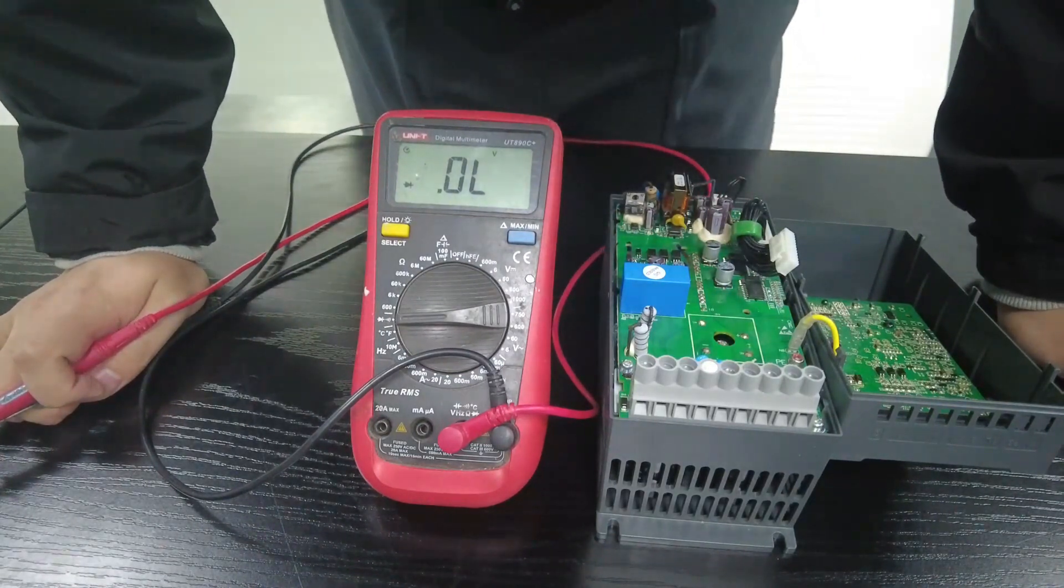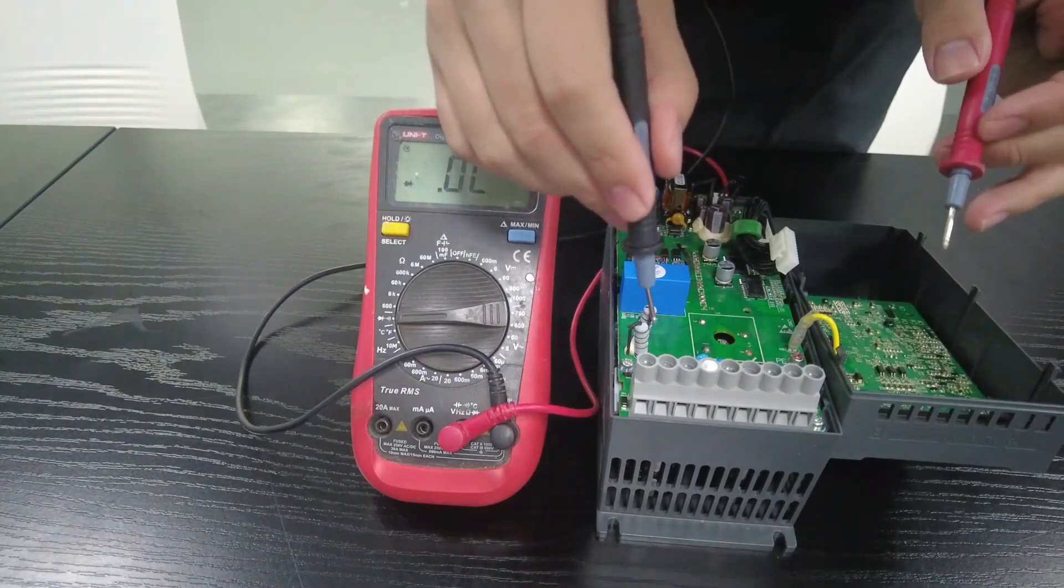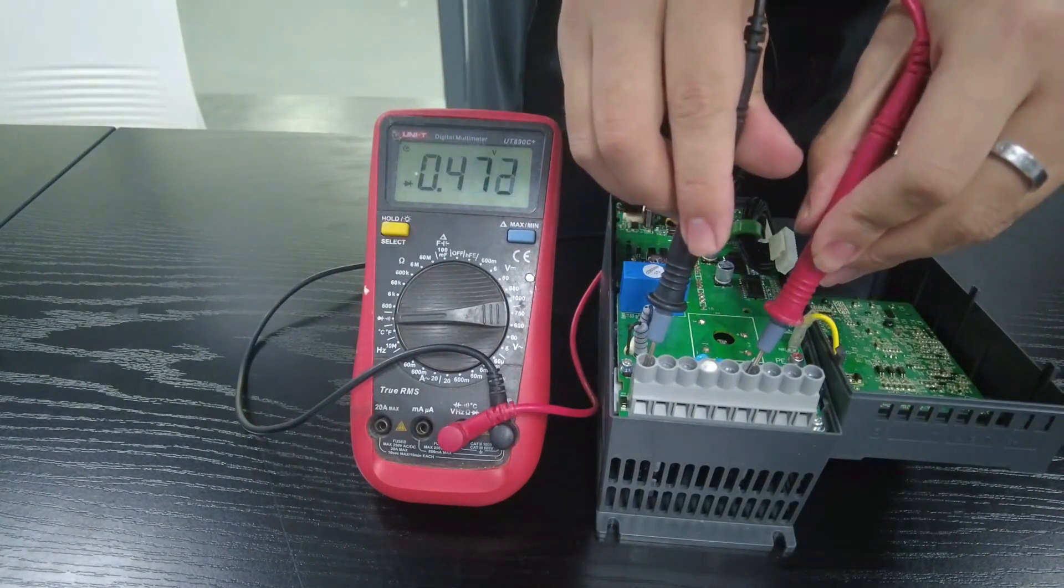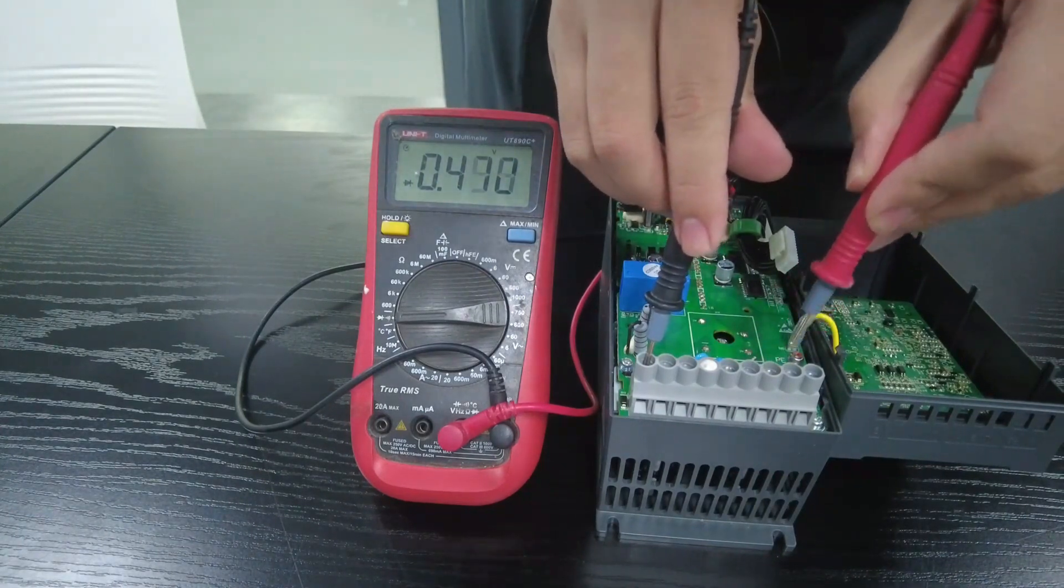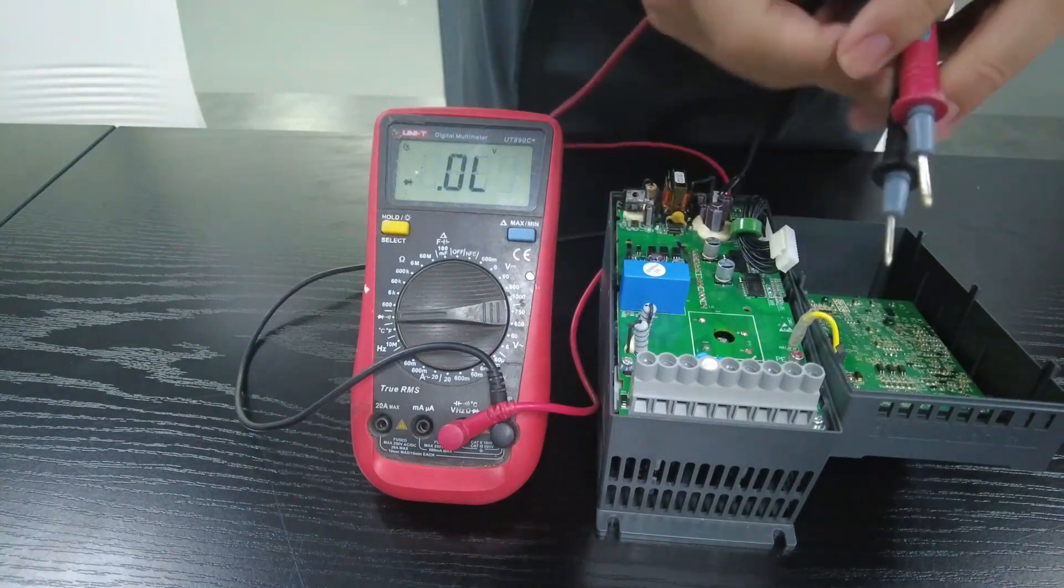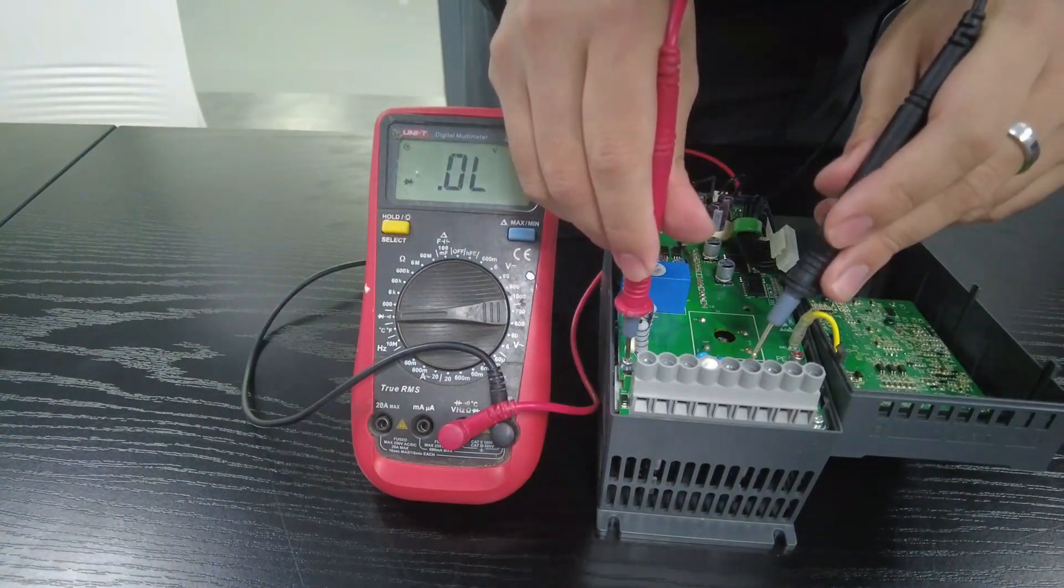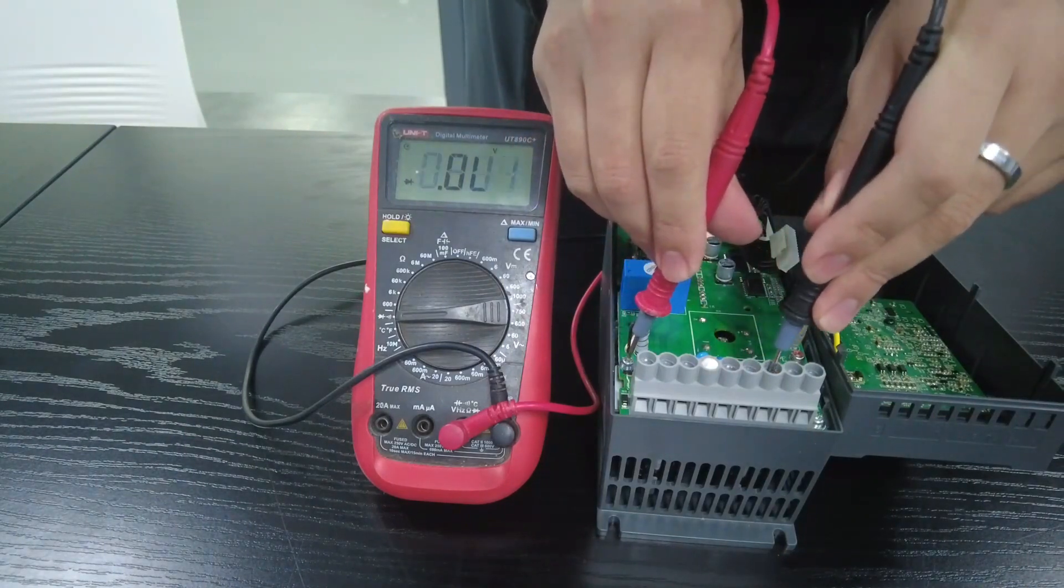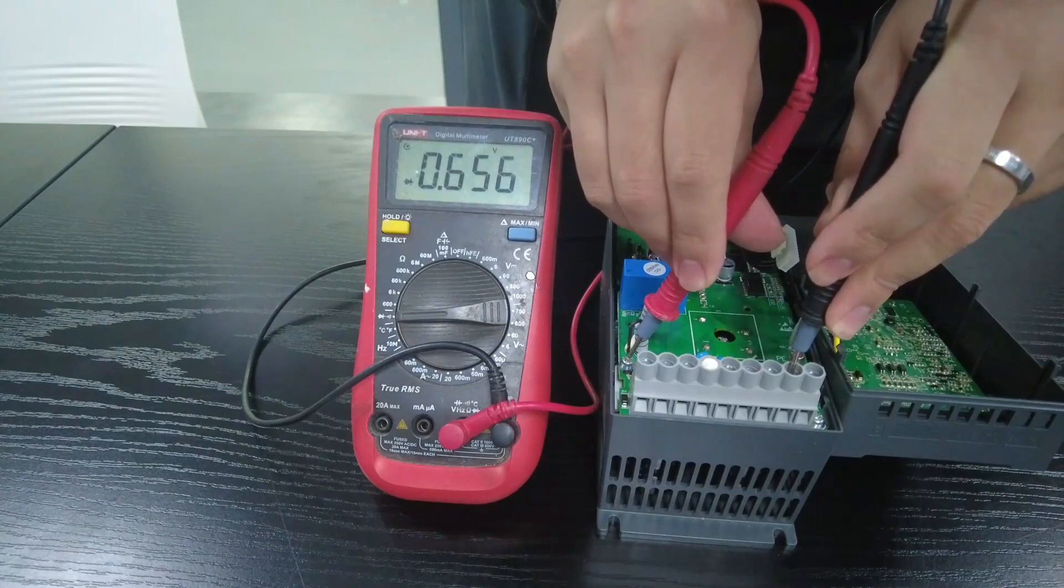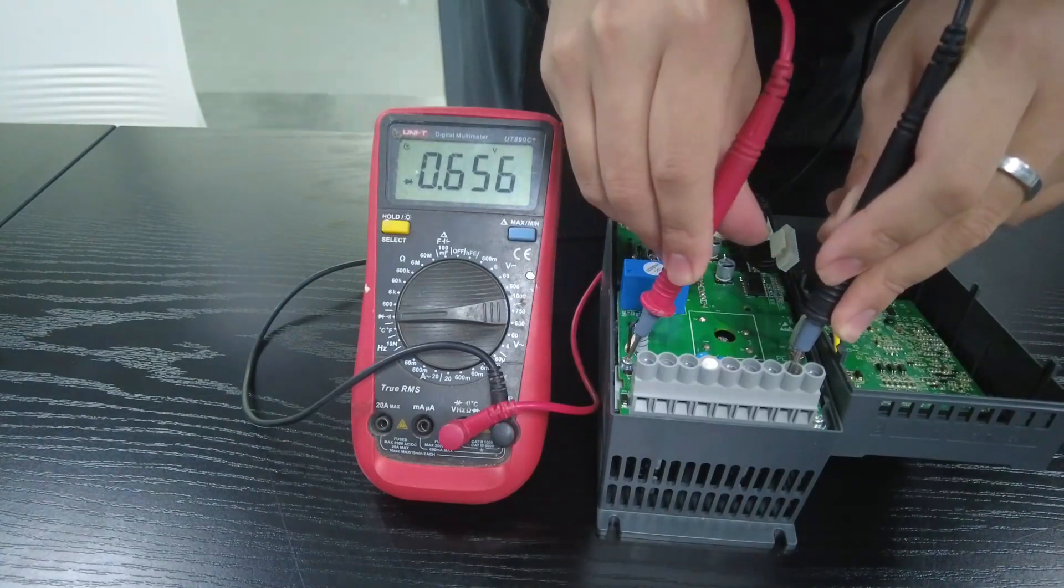Connect the black test lead to the positive terminal and then use the red test lead to the negative terminal, and then use the black test lead to test the UVW three terminals in turn. It is normal if the measured value is around 0.645.